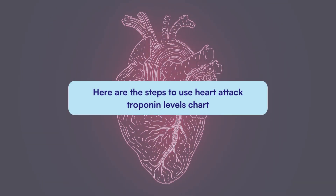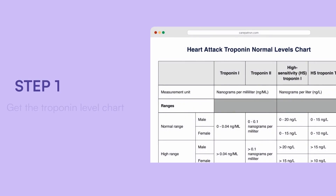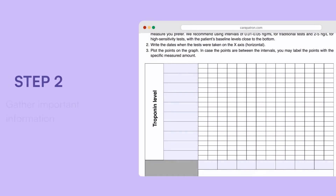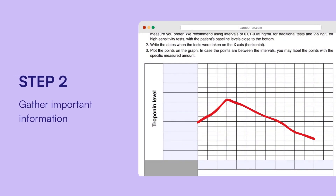Here are the steps to use the heart attack troponin levels chart. First, download the troponin levels chart, which is linked in the description below, or sign up to CarePatron for free, where you can explore our templates library. Then gather important information: for diagnosing a heart attack, fill in the chart with troponin level results, clinical assessment notes, and echocardiogram analysis. Be sure to include symptoms like chest pain and breathlessness.